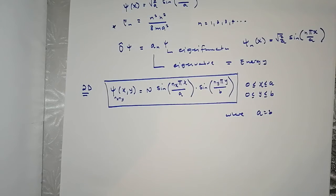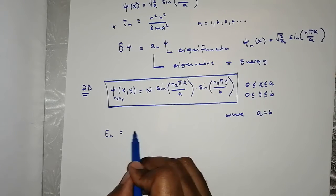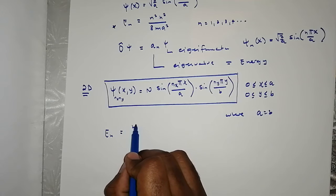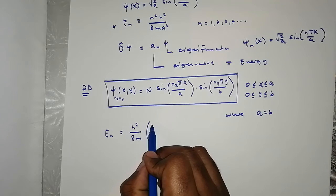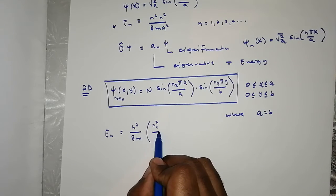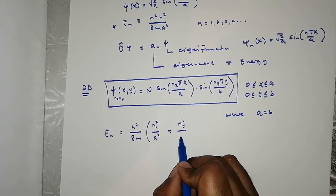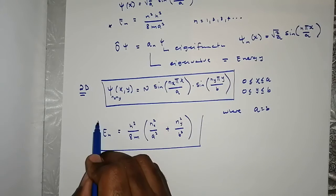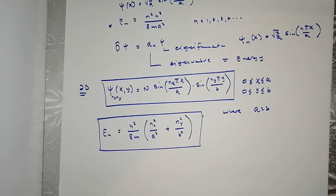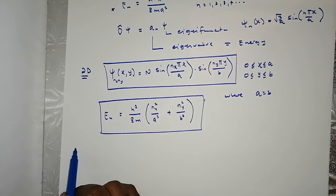For the two-dimensional model, the corresponding energy is h²/8m multiplied by (nₓ²/a² + n_y²/b²). I never actually tackled the 2D case step by step — I only did the 1D and 3D derivations in detail.